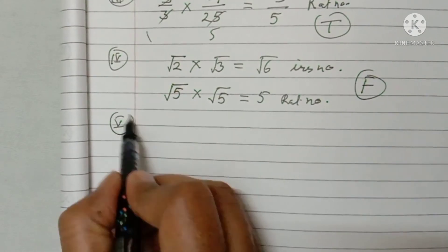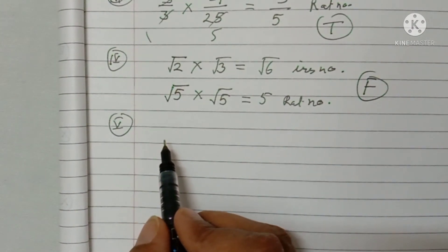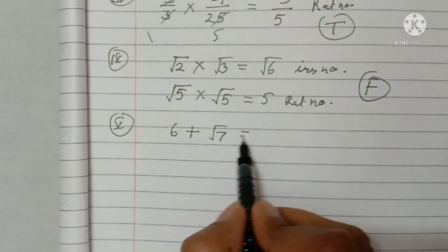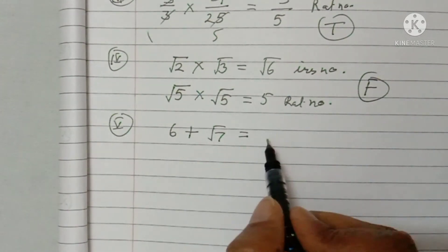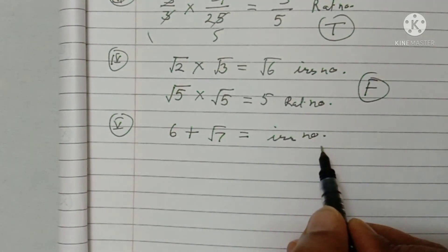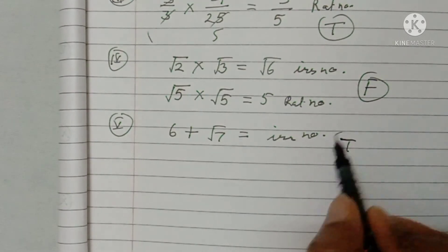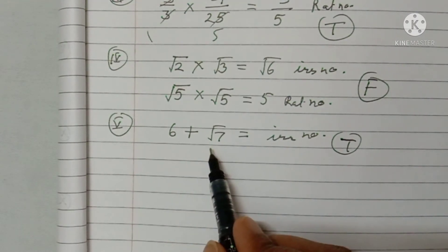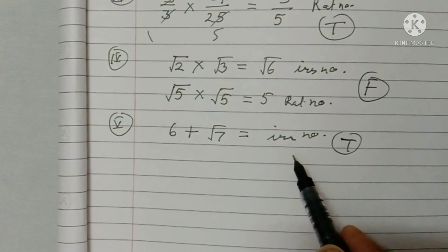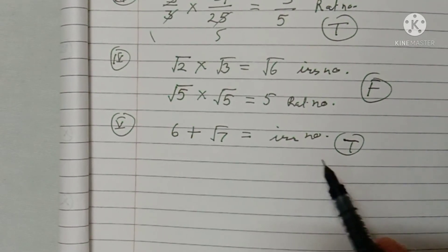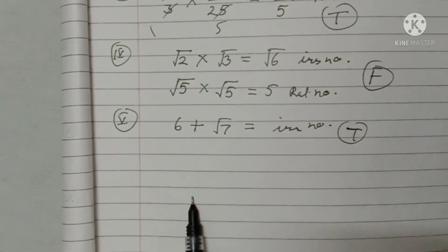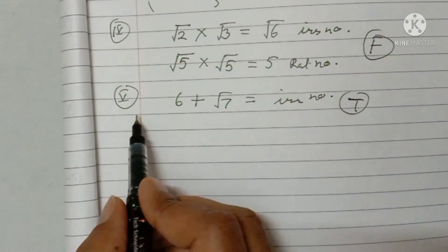Fifth part: the sum of a rational number and an irrational number is irrational. Take 6 (rational) + √7 (irrational). You will get an irrational number. So this statement is true. Properties also confirm that the sum, difference, product, and quotient of a rational and irrational number always gives an irrational number.